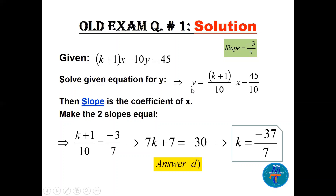Make the two slopes equal. The given slope is minus 3 over 7, and from the equation it is (k+1) over 10. Just cross multiply: 7k + 7 equals minus 30. Take 7 to the other side to get k. The answer is D.